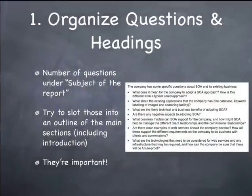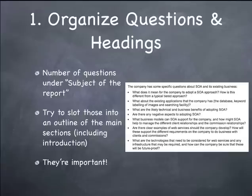If you go back to the TMA document itself, which is described in the block 3 companion, a number of questions that you need to discuss in the report are listed under subject of the report. For example, the company has some specific questions about service-oriented architectures and its existing business: What does it mean for the company to adopt an SOA approach? How is this different from a typical tiered approach? Or what are the technologies that need to be considered for web services and any infrastructure that may be required? Take a look at each one of these questions and try to slot them into your outline of the four main sections.